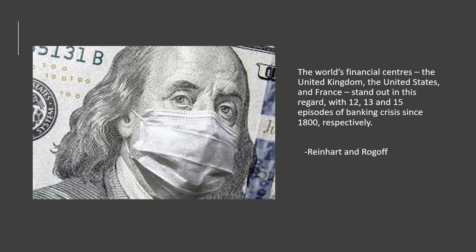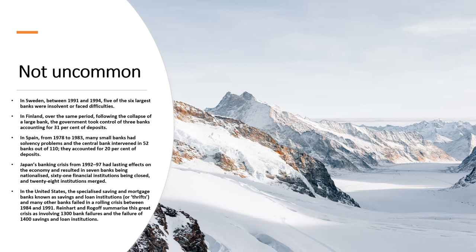Banking crises are actually more common than most people think. According to Reinhart and Rogoff, the world's financial centres — the United States, the United Kingdom, and France — have had roughly 12, 13, and 15 episodes of banking crisis since the 1800s respectively. Even countries considered stable and prudent, like Sweden and Finland, still face banking crises. In Spain there was a huge crisis accounting for 20% of deposits. In Finland, the government had to take control of three banks accounting for 31% of deposits. In Sweden, five of the six largest banks were insolvent or faced difficulties. Similar situations have occurred in Japan and the United States.